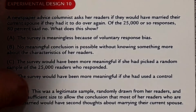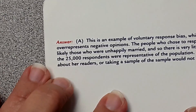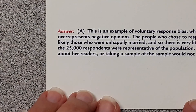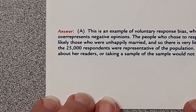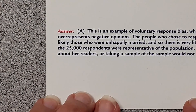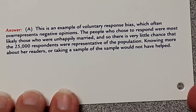The answer is A — this is an example of voluntary response bias, which often over-represents negative opinions. The people who chose to respond were most likely those who were very unhappily married, so there is very little chance the 25,000 respondents were representative of the population. Knowing more about her readers or taking a sample of the sample would not have helped.